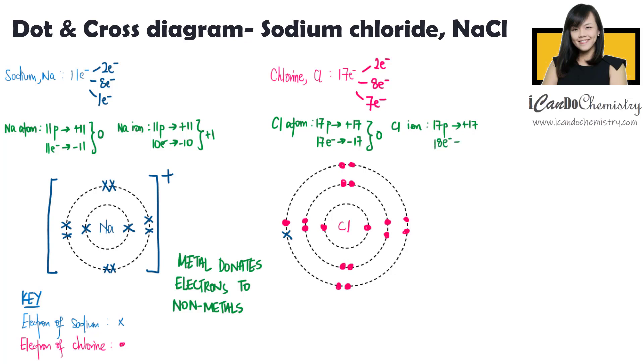However, there are 18 electrons now. Hence, the negative charge is negative 18. Overall charge in chloride ion is negative 1. Put the bracket and the charge in the dot and cross diagram.